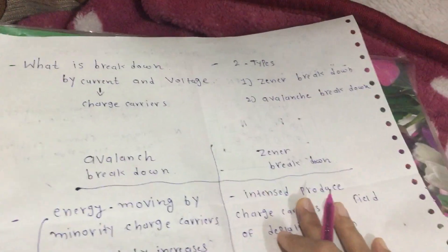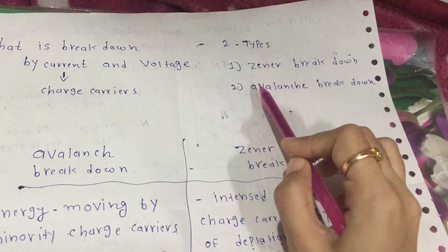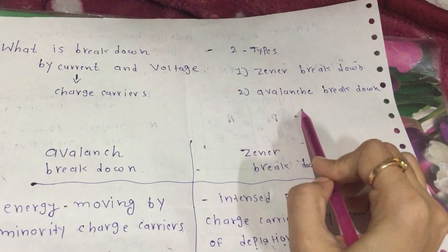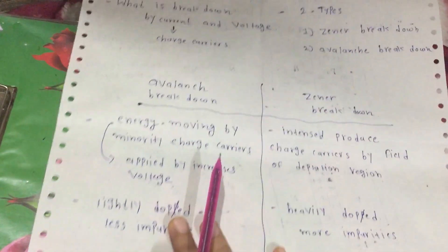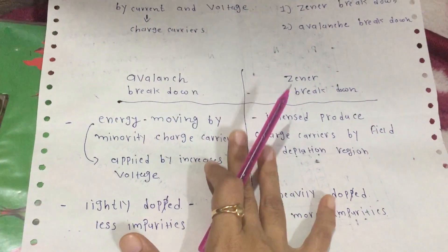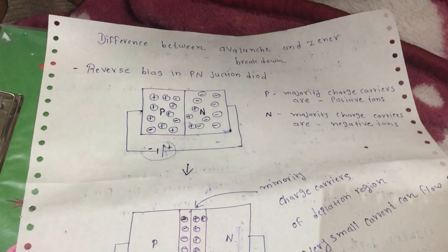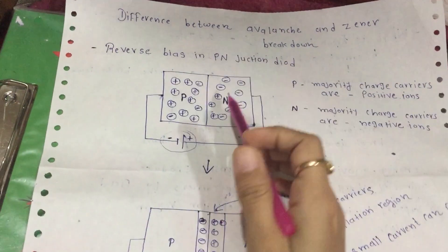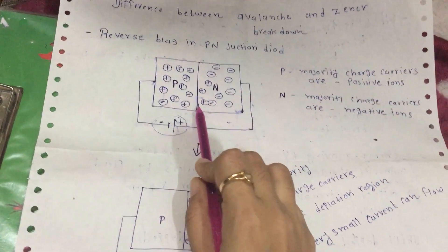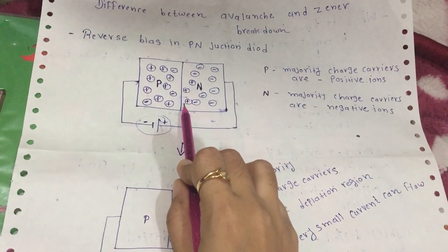There are two types of breakdown: the first is zener breakdown and the second is avalanche breakdown. We will see the difference later, but first let's understand about avalanche breakdown.